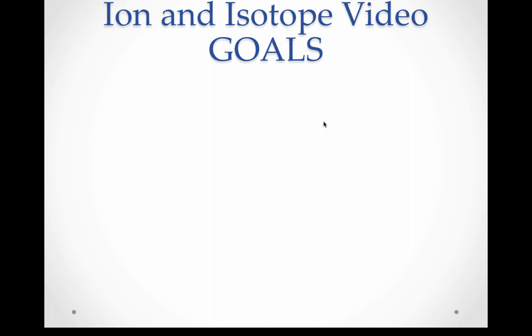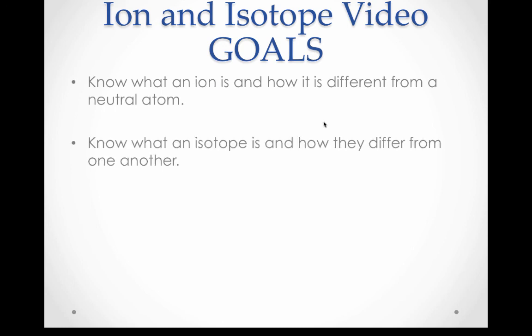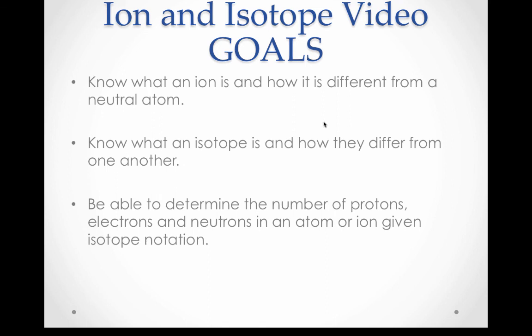That brings us to the end of this video. Let's review our goals. First, we learned what an ion is and how it differs from a neutral atom — an ion is a charged atom that's gained or lost electrons. Then we learned what an isotope is: isotopes are atoms of an element with a different number of neutrons from one another, therefore having a different mass number. And we learned how to determine the number of protons, electrons, and neutrons in an atom given its isotope notation.